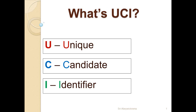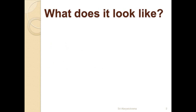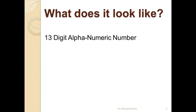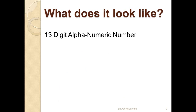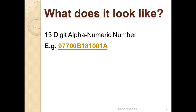So what is UCI? It's the Unique Candidate Identifier. Let's have a look at what it looks like and what it contains. The UCI is a 13-digit alphanumeric number — it has both numbers and English letters. This UCI number has 11 numbers and two English letters placed in very unique positions. Here is an example: the UCI number shown is 9 7 7 0 0 B 1 8 1 0 0 1 A.